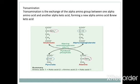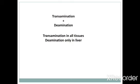The first reaction in formation is transamination — the exchange of an alpha amino group between one alpha amino acid and another alpha keto acid, forming a new alpha amino acid and a new keto acid. The enzymes catalyzing this are called transaminases or aminotransferases, which require pyridoxal phosphate as coenzyme. For example, from alanine the amino group is transferred to alpha ketoglutarate, and alpha ketoglutarate becomes glutamate, catalyzed by alanine aminotransferase.